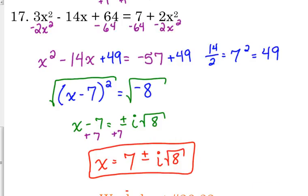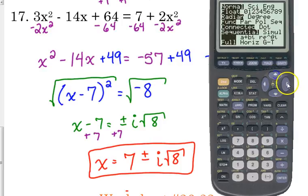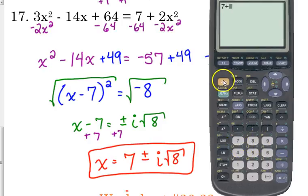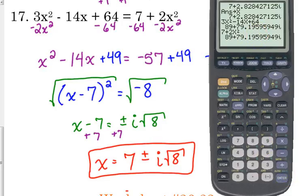A little reminder where your i is on the calculator. First of all, you've got to make sure that you are in imaginary mode. So mode is beside your second button. Almost all the way to the bottom, you've got to highlight a plus bi. So 7 plus i is second and your decimal button. Square root of 8 gives us the decimal value for that. I want to store it as x. Plug it back into the original. 3x squared minus 14x plus 64, and that should be equal to 7 plus 2x squared. And we get the exact same decimal values there. So we are good. That is indeed the answer.